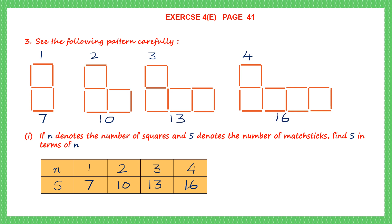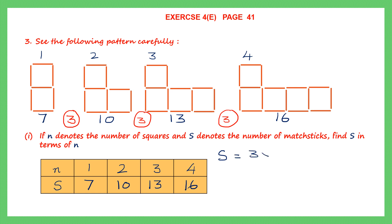Now we have to observe this carefully. From 7 to 10 it is 3; 7 plus 3 gives us 10, 10 plus 3 gives us 13, 13 plus 3 gives us 16. So we have a common difference of 3. That means to find the relation between S and n, let's start by saying S is equal to 3 times n.